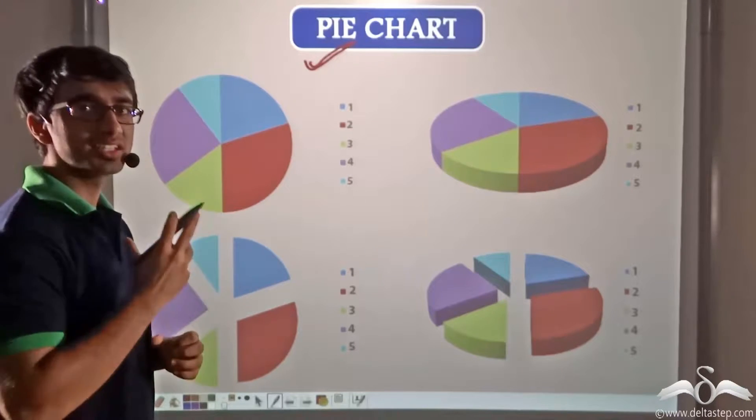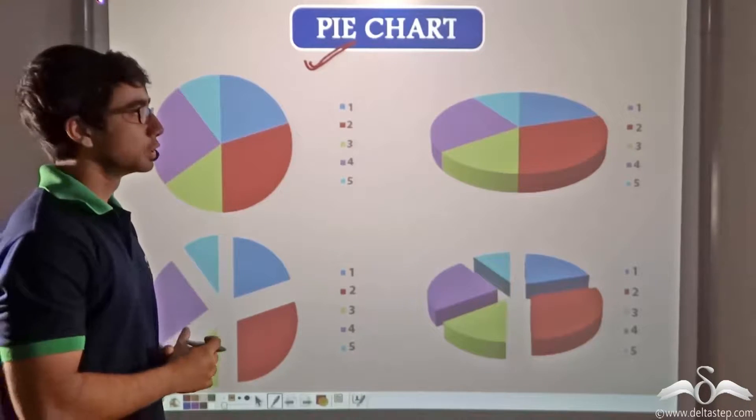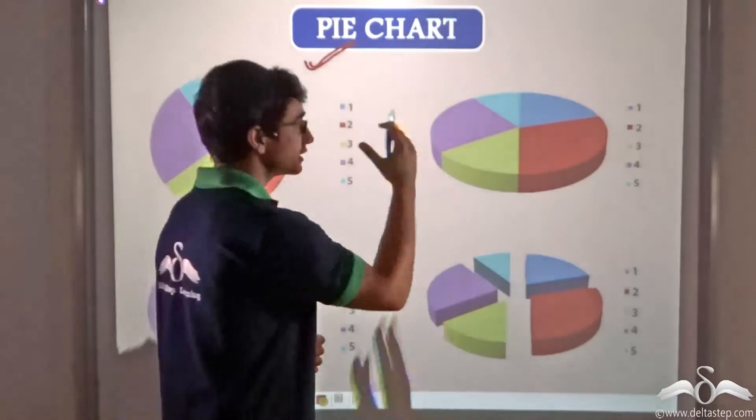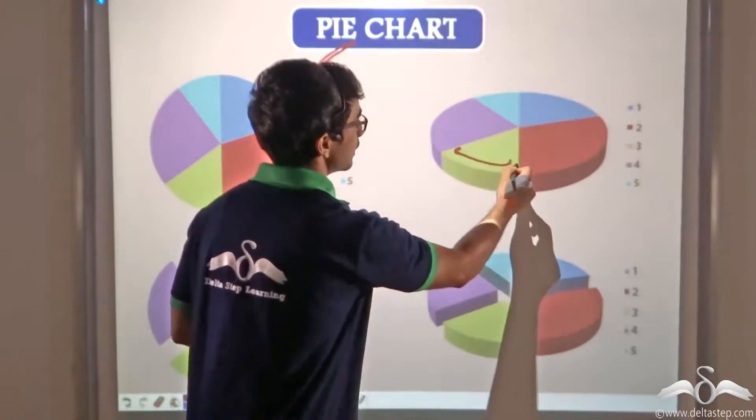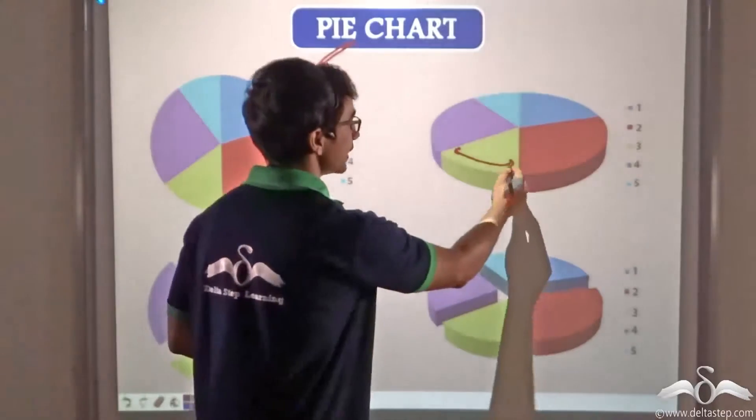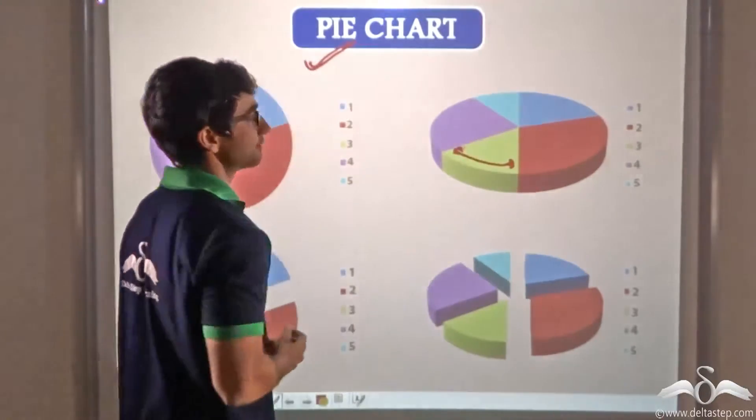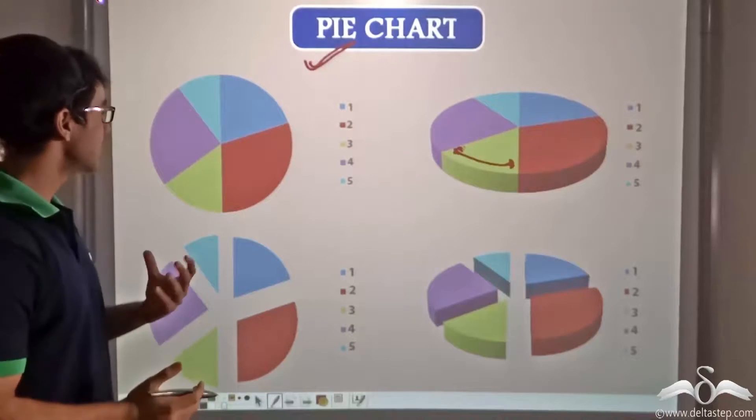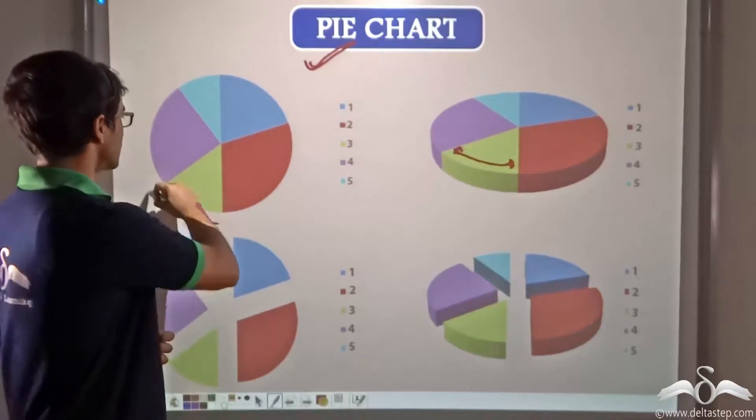Now what is the utility of pie charts? With the help of pie charts, since it is an absolute pictorial representation, we can tell how much a particular observation is occupying in the given data set. As you can see in the case of a pie chart, we are employing the help of a circle.